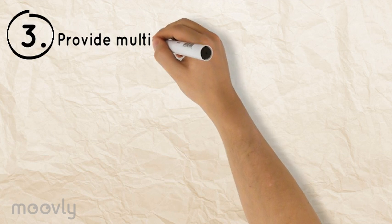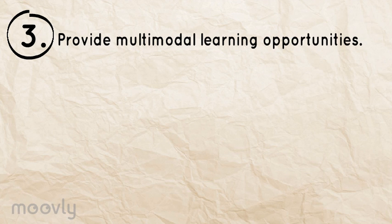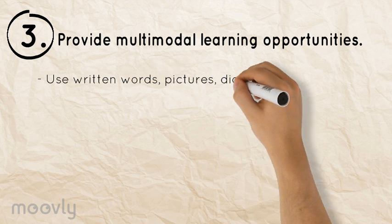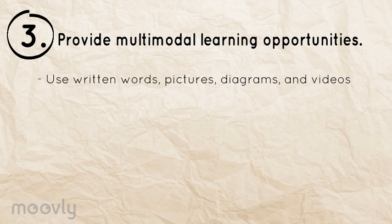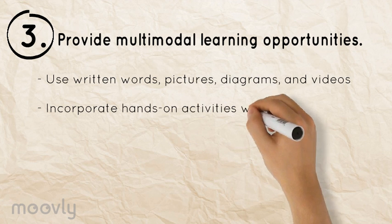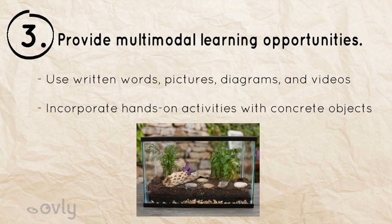Providing options for multimodal learning, such as visual cues and concrete materials, will also support language weaknesses in the classroom. This could mean accompanying oral instructions with written words, pictures, diagrams, and videos to help support learning. Also, hands-on activities like exploring habitats outdoors or creating a habitat in the classroom will allow all children to participate in and benefit from the class material regardless of their language abilities.